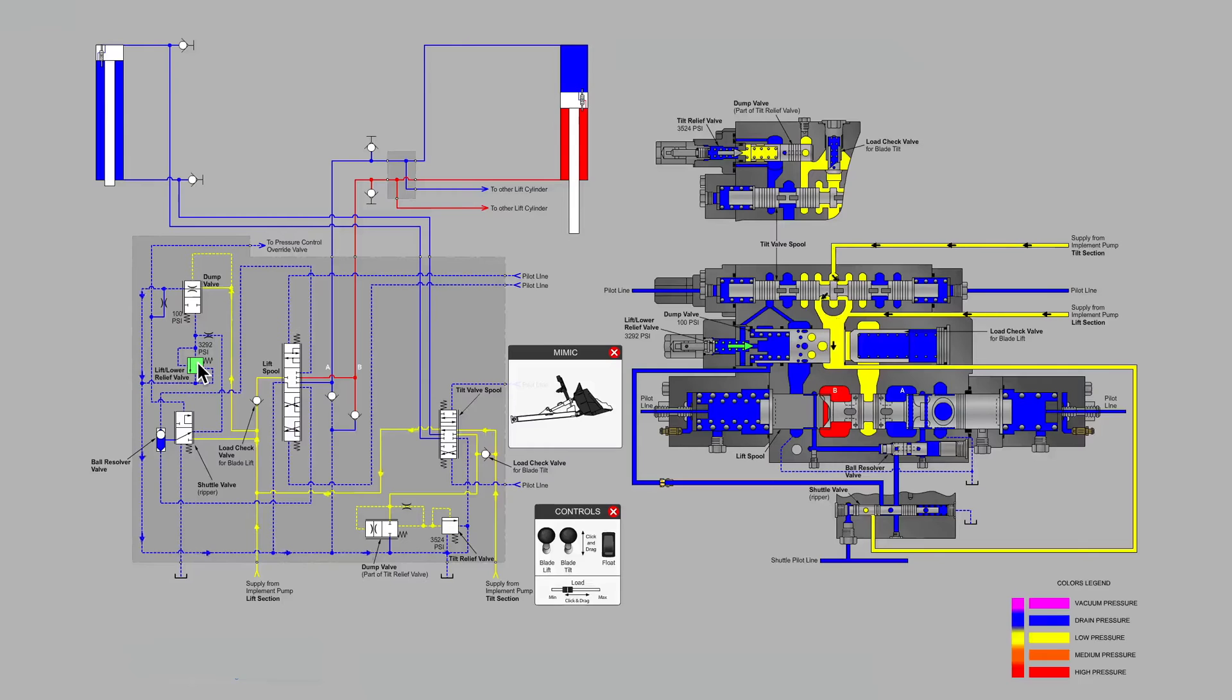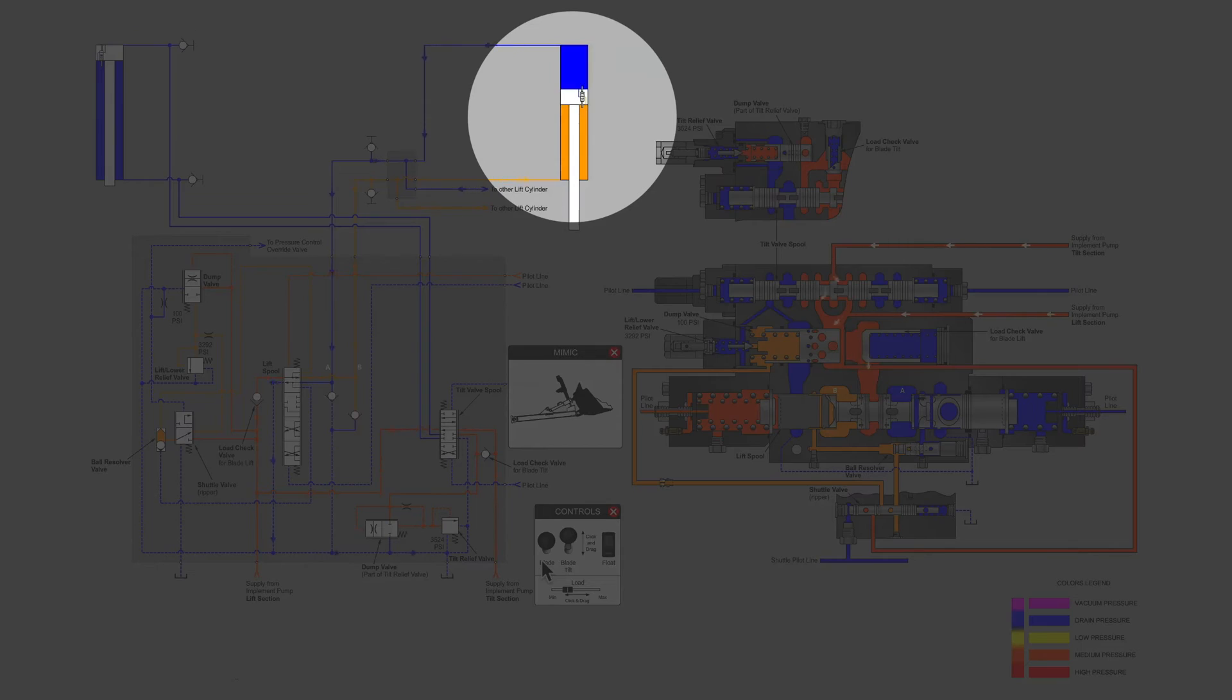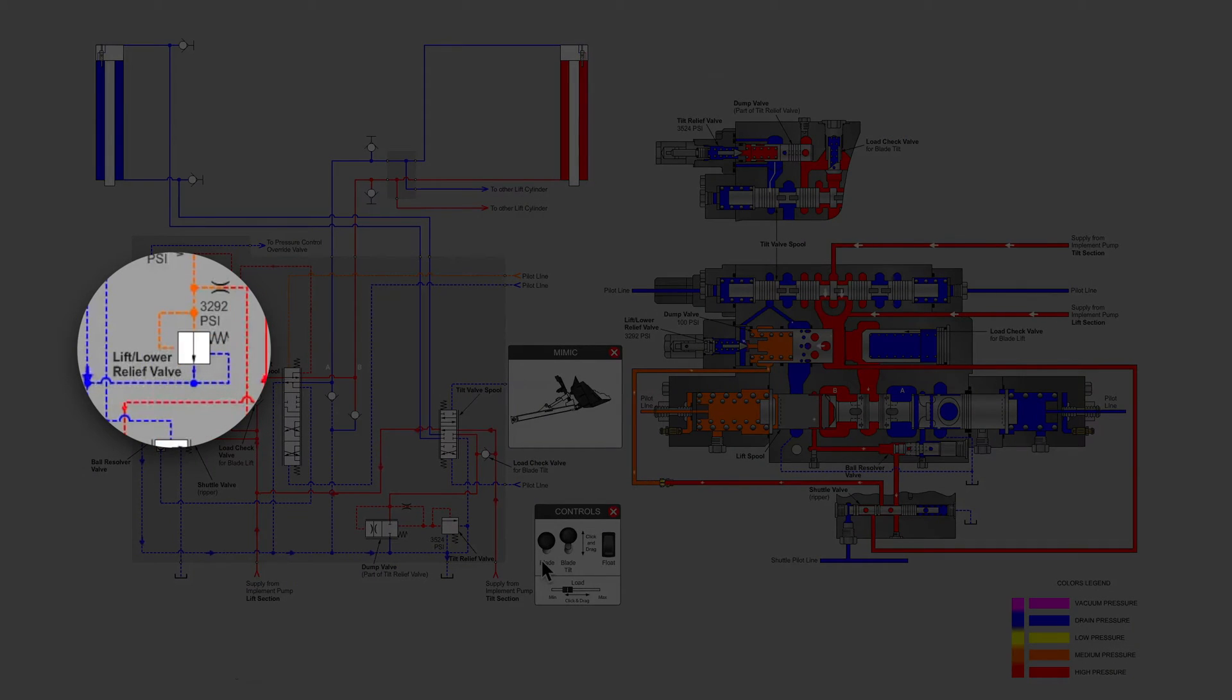But here it is showing up in a larger valve bank for this particular model of Dozer. So notice that when we deadhead, let's move the blade lift cylinder all the way to the top and deadhead.